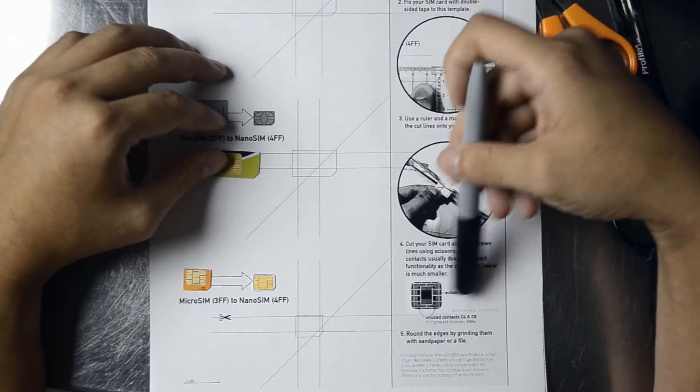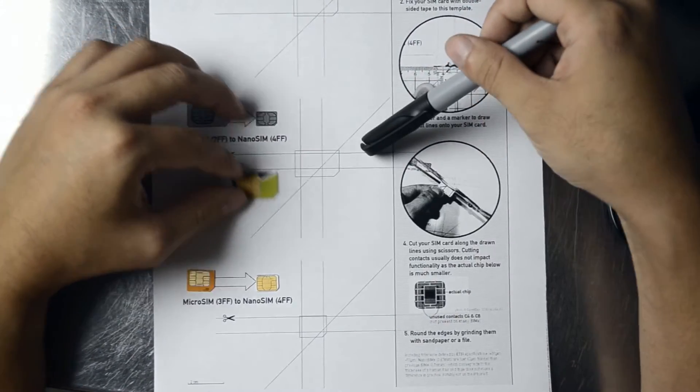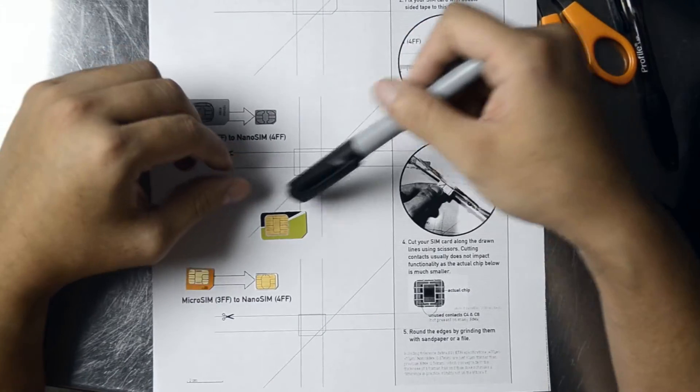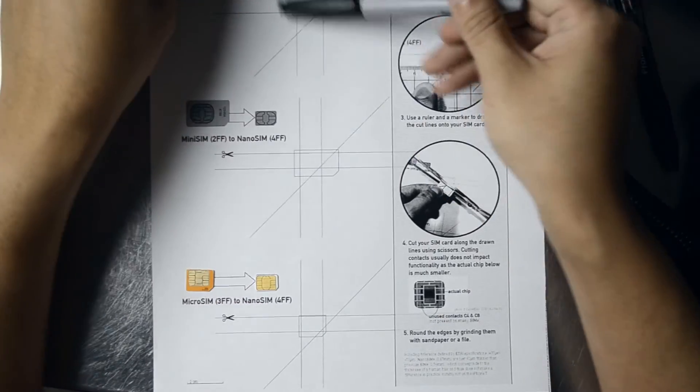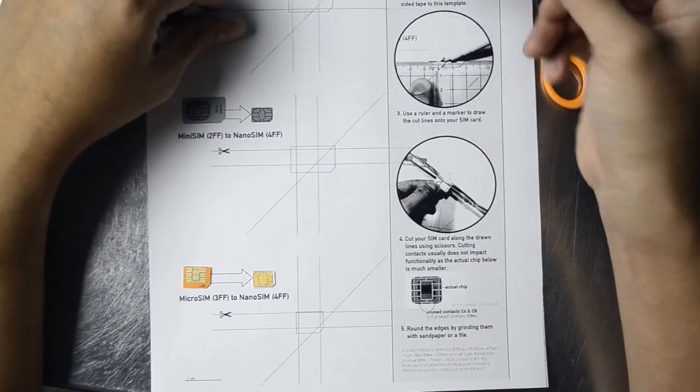It notes on the side that the actual chip is on this inner portion. So, that's why you can cut the miniSIM down and keep on cutting it down.